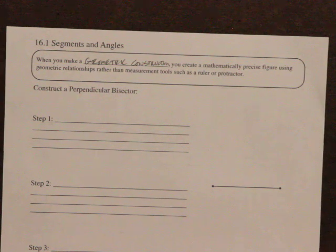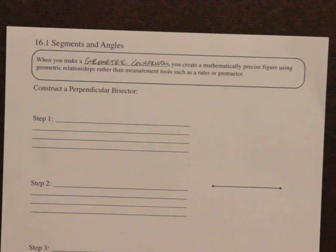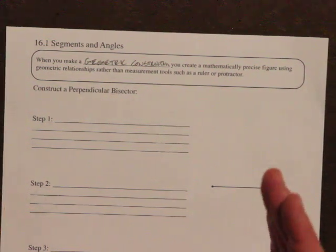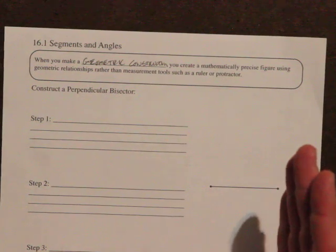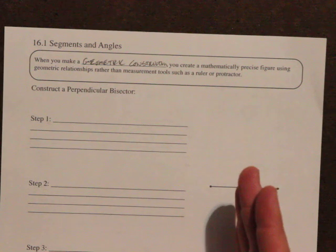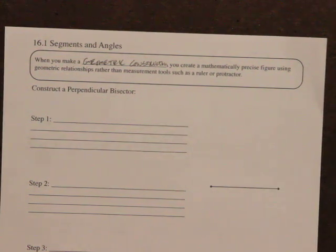Here's what we're going to do: we are going to construct a perpendicular bisector. Remember, a perpendicular bisector is a line or line segment that cuts another line segment in half at a 90-degree angle. So let's do this.